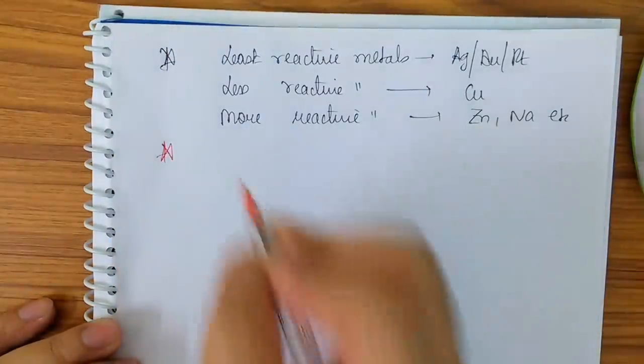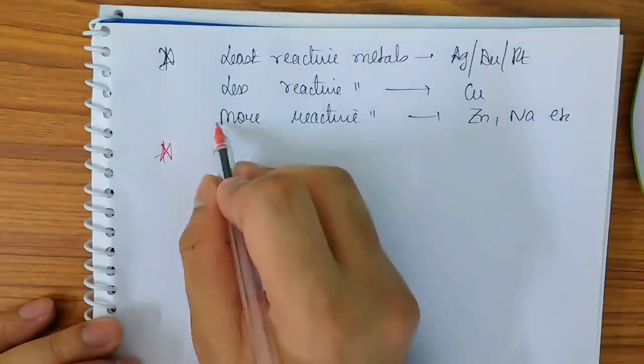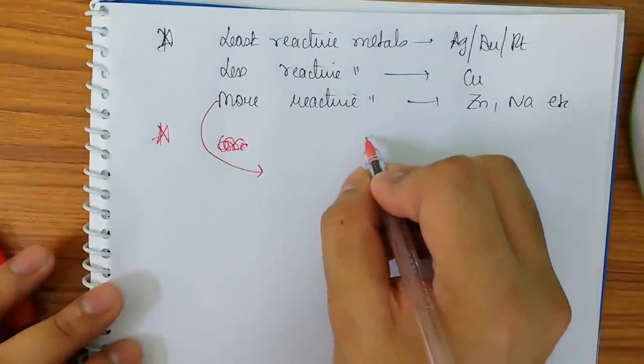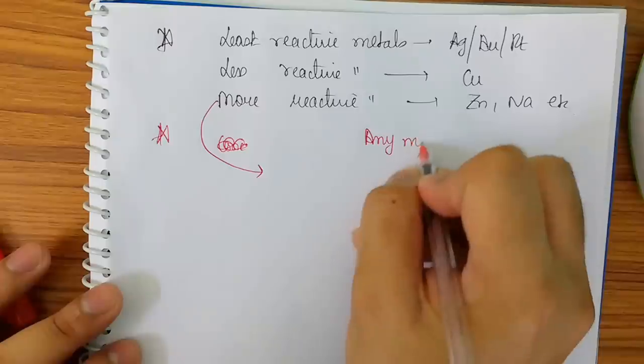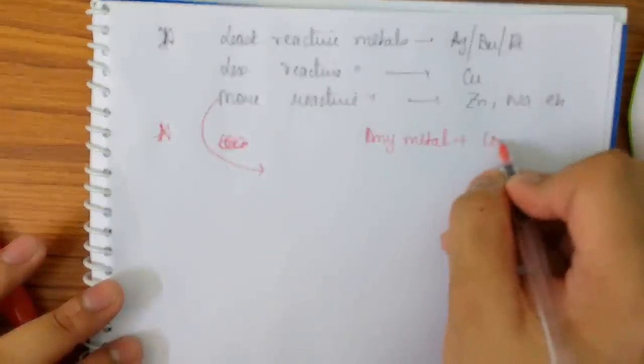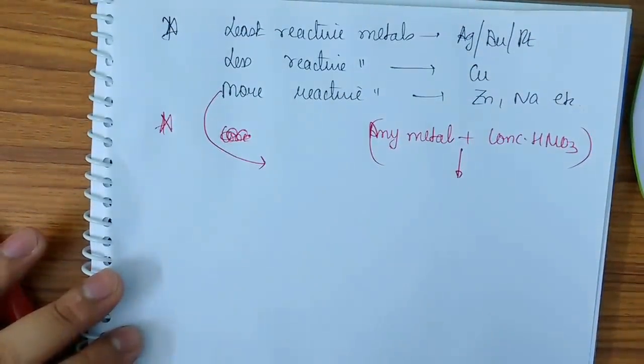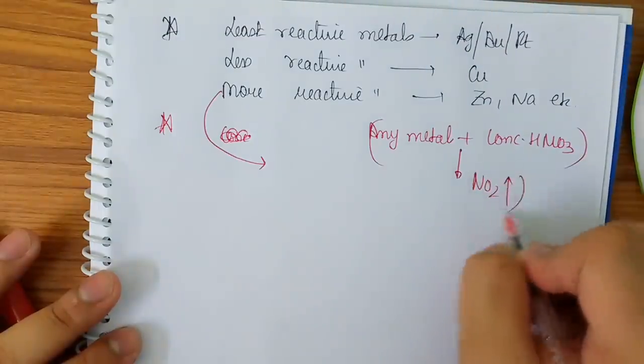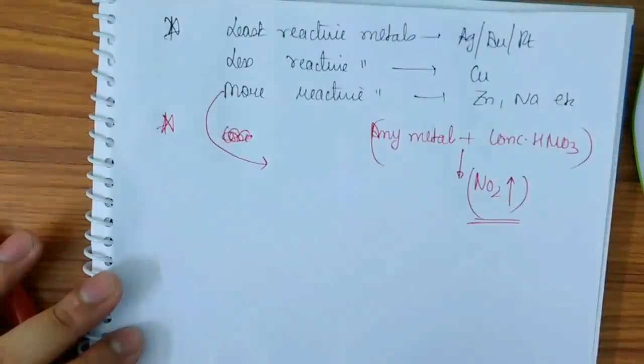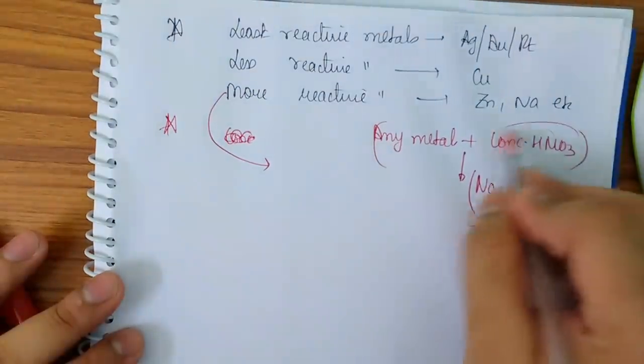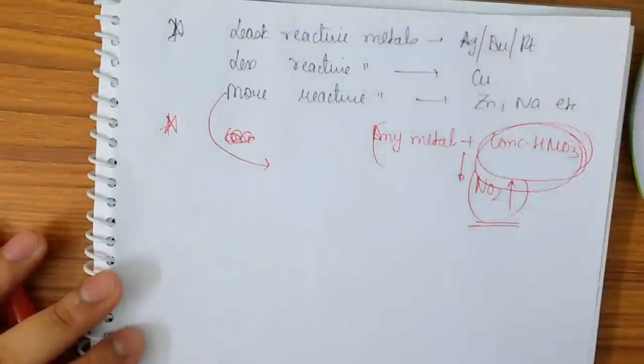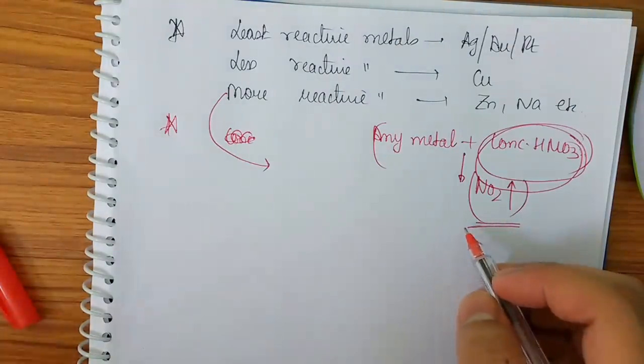What I have to teach here is: if I take the more reactive metals and I react with concentrated HNO3, I will not take concentrated HNO3 separately because any metal plus concentrated HNO3—any type of metal, less reactive, least reactive, or more reactive—I will always get NO2 as the product. So this thing is fixed: concentrated HNO3, NO2 will be evolved, that is fixed.